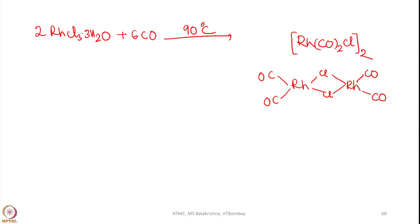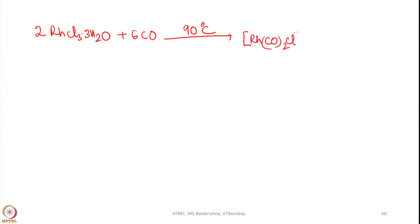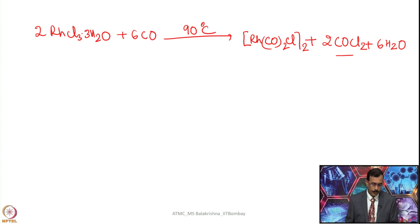Take rhodium trichloride trihydrate and pass carbon monoxide at 90 to 95 degrees centigrade. So you get this compound. In this one what are the other products we are going to get? So later try to see whether this reaction is balanced or not. In this reaction we are getting phosphine, now one has to be very careful and this reaction has to be carried out in a well ventilated hood.